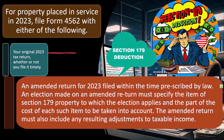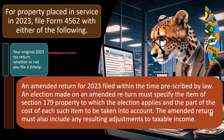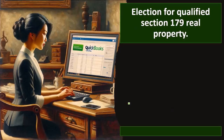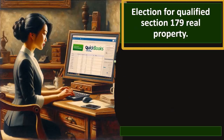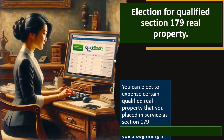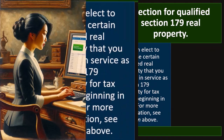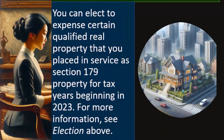The amended return must also include any resulting adjustments to taxable income. Regarding the election for qualified Section 179 real property, you can elect to expense certain qualified real property that you placed in service as Section 179 property for tax years beginning in 2023.